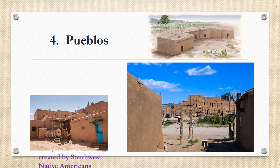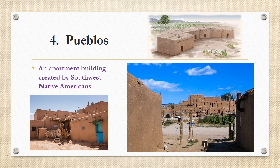Number four is pueblos. Pueblos are apartment-like buildings that were created by Southwest Native Americans. You can see in the top picture there are side-by-side apartment-style structures, and in the bottom picture they're almost built on top of each other. One story would house a family and then another family on top, and they would use ladders in between in order to get from one apartment house to the next.